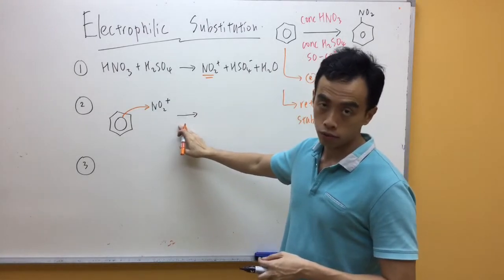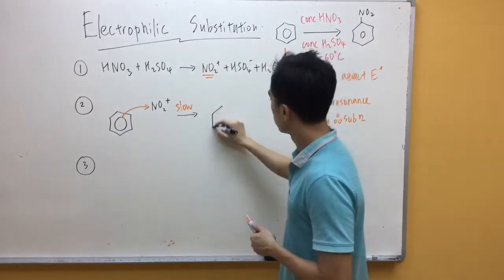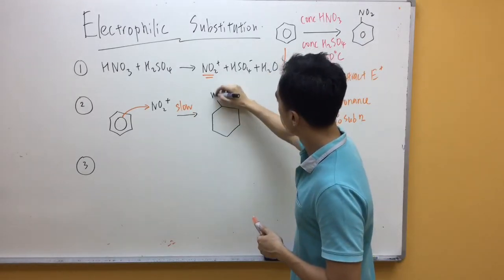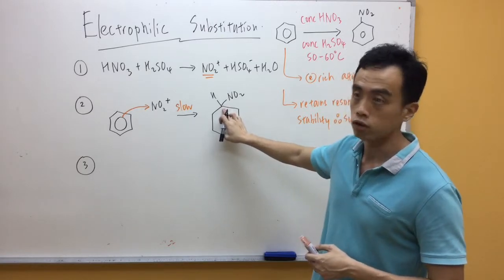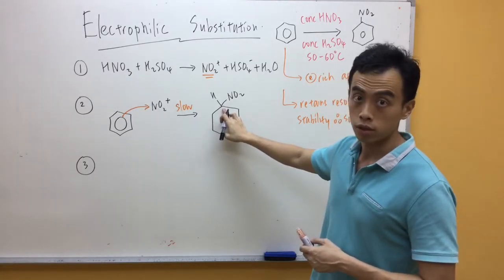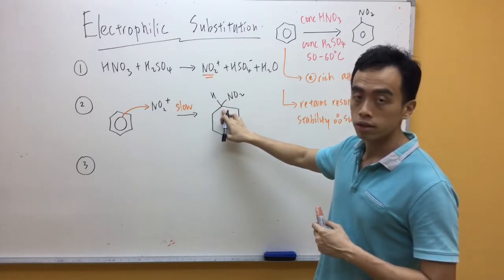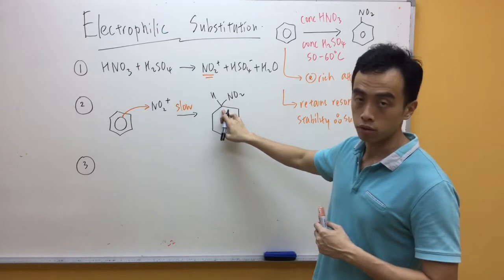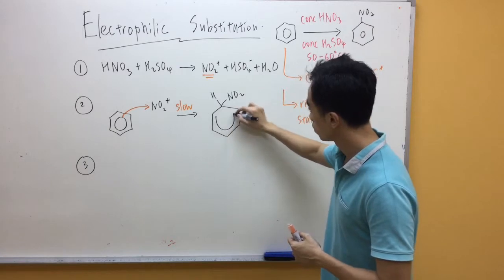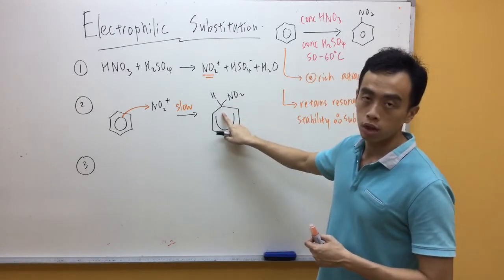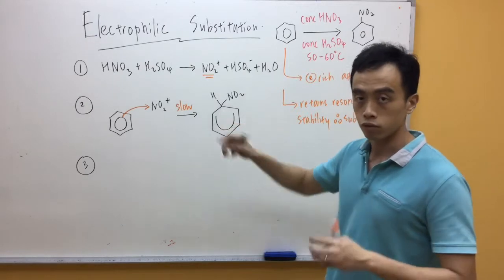Now this particular step is the slow step, so I put slow on the arrow. Now what you notice is, this particular carbon now is attached to four groups. The nitro group is now attached to this particular carbon. So the ring above this carbon will be broken. So what we'll do is, we'll draw an open ring.